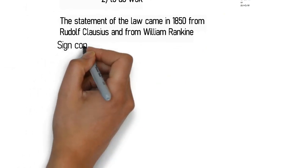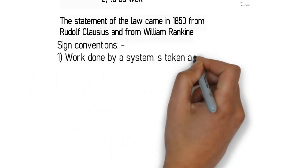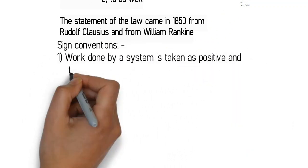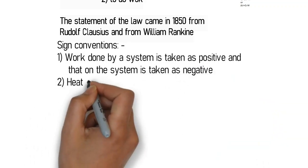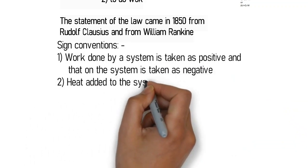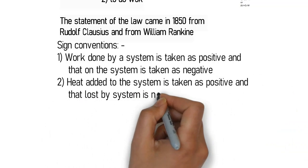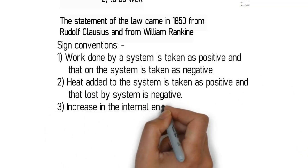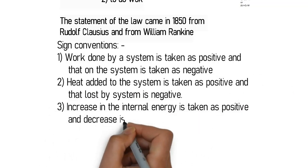The mathematical form is Q = ΔU + W, where work done W = P·dV. The sign conventions are: work done by the system is positive and work done on the system is negative; heat added to the system is positive and an increase in internal energy is positive, while the reverse is negative.